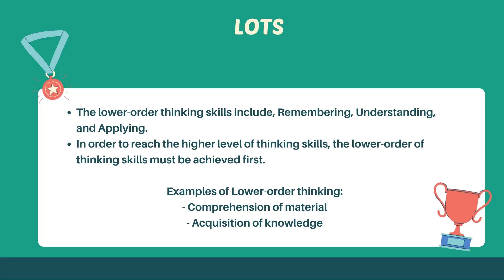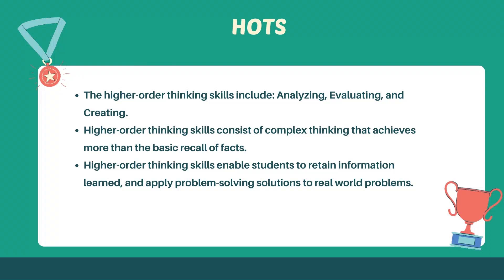If a person is unable to achieve all lower-order thinking skills and move up to higher-order thinking skills, then this person will not be prepared for real-life situations. This is because lower-order thinking skills may only need to be recalled and slightly understood. Examples of lower-order thinking skills include comprehension of material and acquisition of knowledge, while higher-order thinking skills include analyzing, evaluating, and creating.